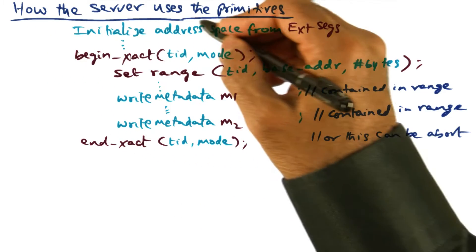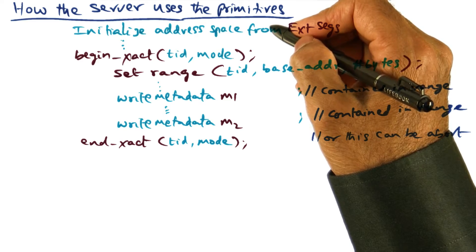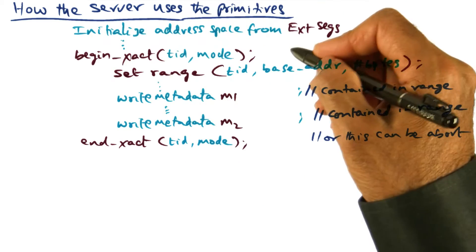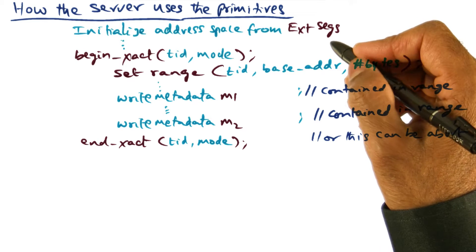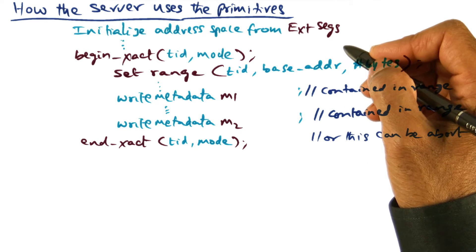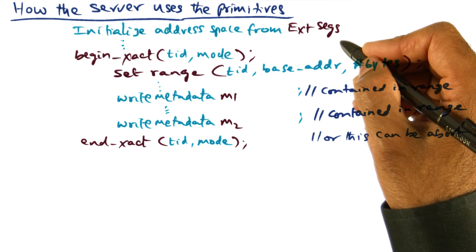Now let's look at how a developer may use these primitives in building a subsystem. The first part of the code is the initialization portion where the developer is mapping the address space of his process to external segments.